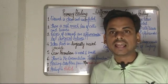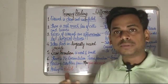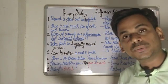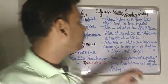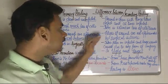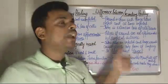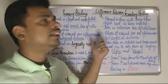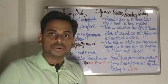Primary healing is mostly induced by the surgeon and takes place in surgically incised wounds. On the contrary, secondary healing takes place in infected and large wounds caused by injury — for example, in road traffic accidents where tissue is crushed or lacerated.